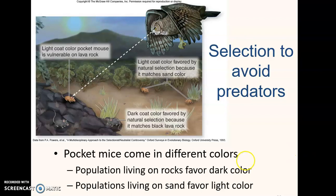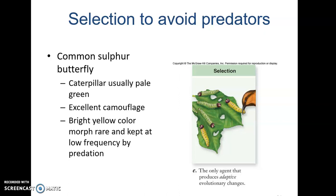Another example is the common sulfur butterfly. Caterpillars are usually a pale green, which is excellent camouflage when they're eating their preferred food, alfalfa. They match that color, so they blend right in. There is another color morph, a bright yellow color, which is kept at low frequencies because of predation. That yellow color stands out against the green alfalfa, making it easier for bird predators to see these caterpillars, and they're eaten before they can mature and reproduce.